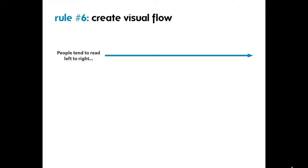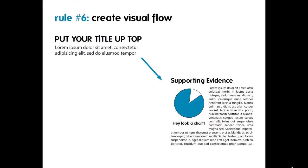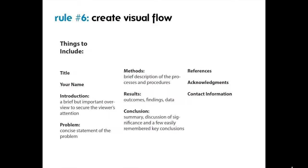Rule number six is about creating visual flow. Your poster should be organized in a way that is clear and easy to follow. People tend to read from left to right and then from top to bottom. Therefore, more important information should be placed on the upper portion of the poster. Visual flow of information is closely related to the narrative you are crafting, so how you organize your poster should coincide with your research narrative. Don't be afraid to get creative with how the information is laid out — everything does not necessarily have to go top to bottom and left to right.